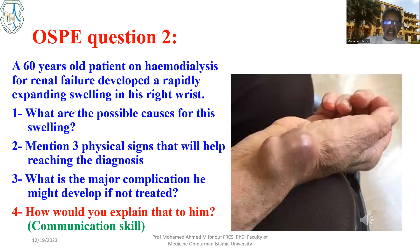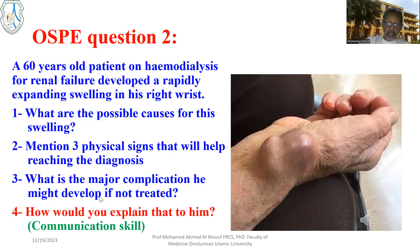The second question: a 60-year-old patient on hemodialysis for renal failure developed a rapidly expanding swelling in the right wrist. What are the possible causes of this swelling — mention two to three possibilities? Mention three physical signs that will help reach the appropriate diagnosis. What is the major complication he might develop if not treated? And, as a communication skill question: how would you explain to him that he needs surgical correction at this site?